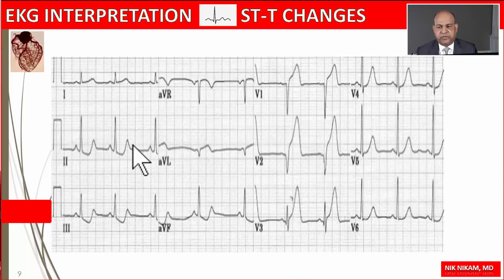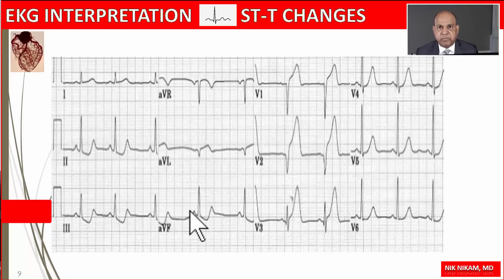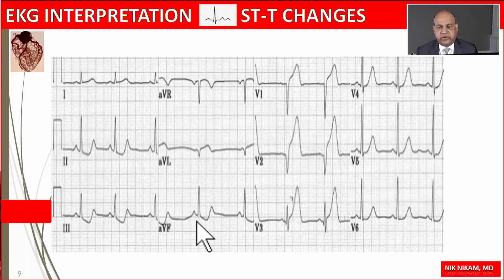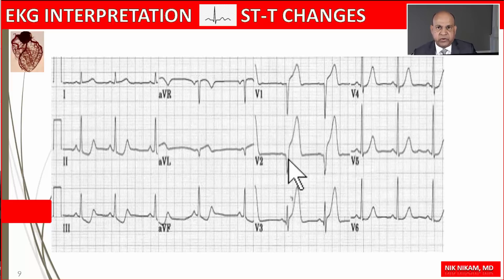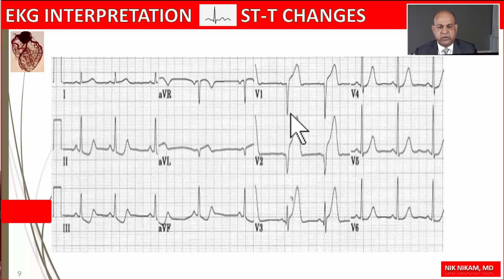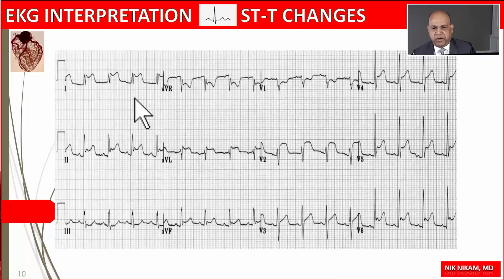Whenever we see these changes we may also see reciprocal ST depression in the opposite leads. Here with anterior myocardial infarction, we see ST depression in the inferior leads. These are known as reciprocal changes. They do not necessarily reflect ischemic changes in the inferior wall, but under certain circumstances ST depression may signify subendocardial ischemia in that particular region.